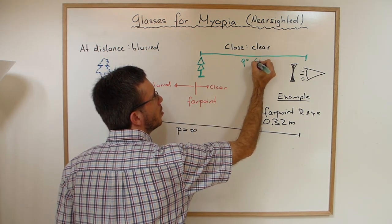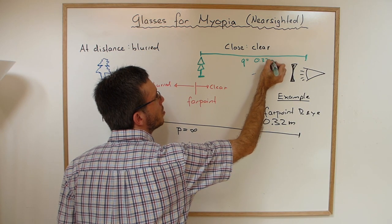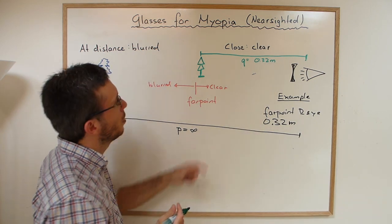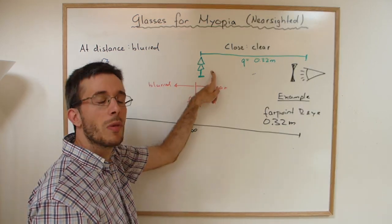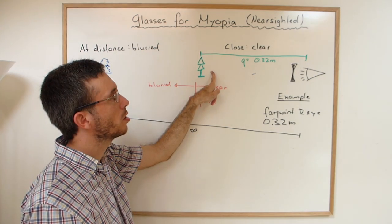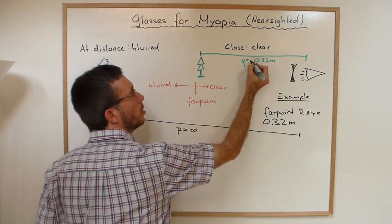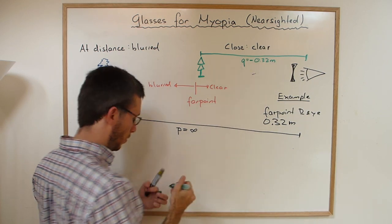So 0.32 meters in my case. And think about, is this a virtual or a real image? It's a virtual image, and therefore we're going to put here a negative sign.